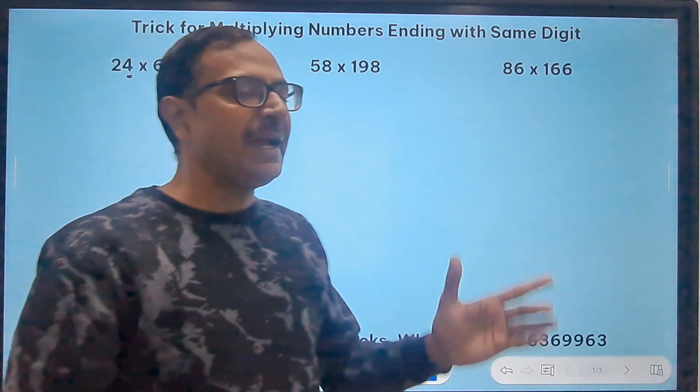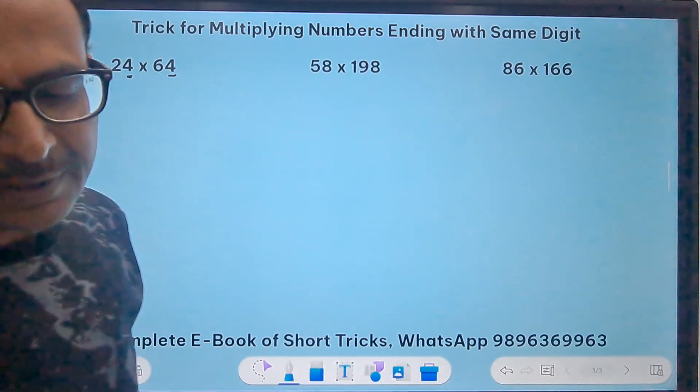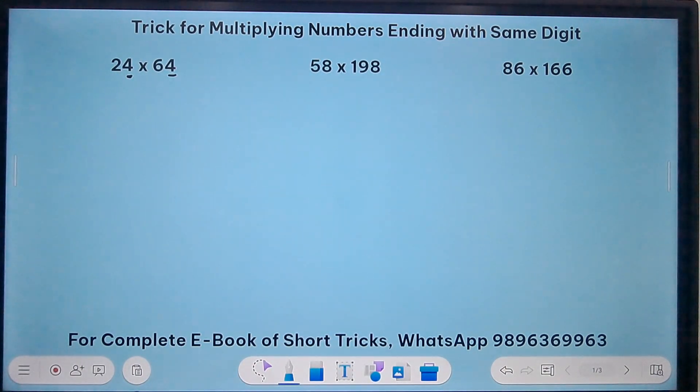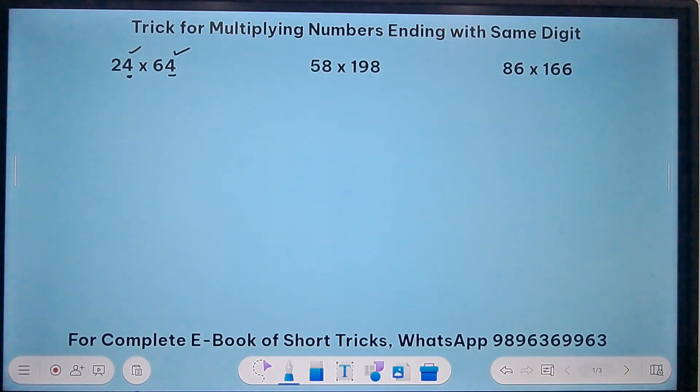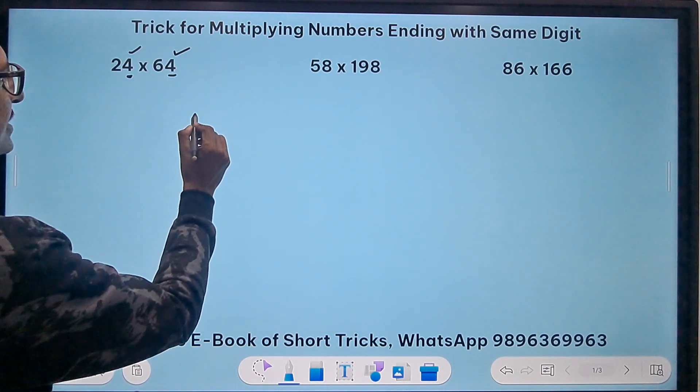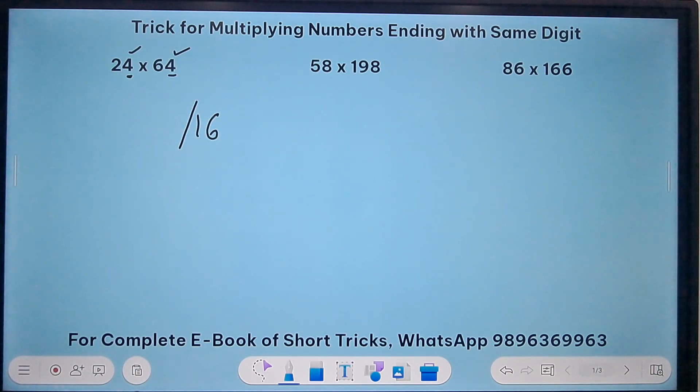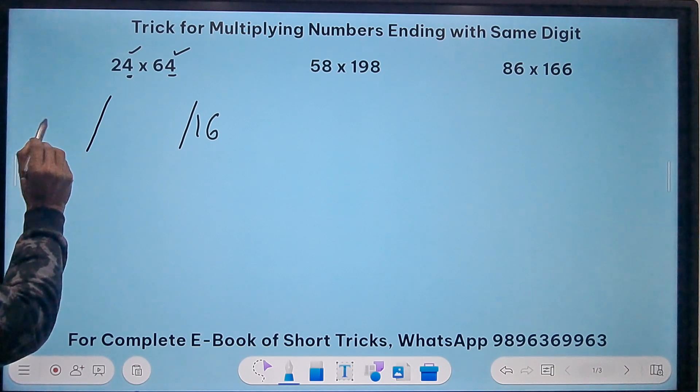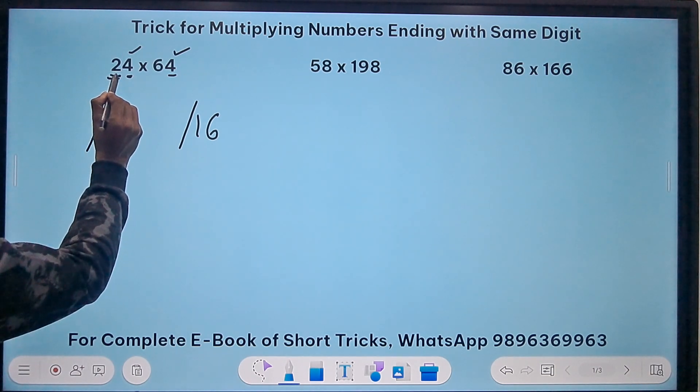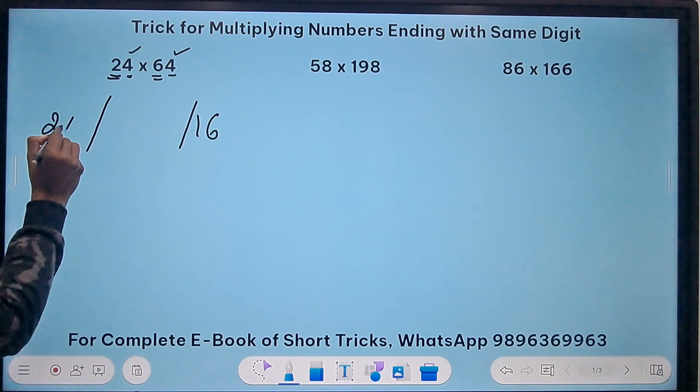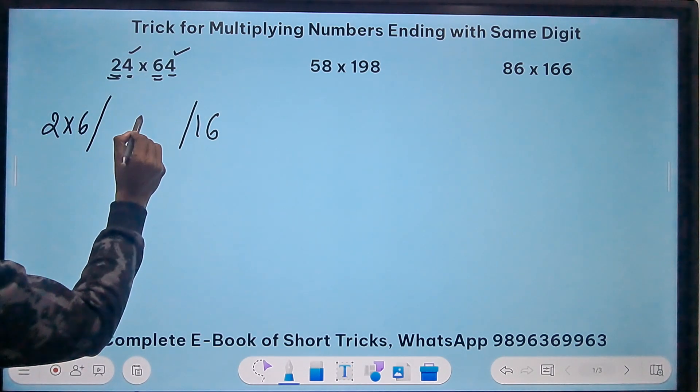Let's get going and see the trick. First let's understand by taking some basic examples which I have written here and then apply it for higher problems also. The trick goes like this: we know that the number ends in 4 here, and so I will write the number 16. 4 square is 16, right? I'll write 16. Now the first part is the product of the remaining numbers, that is 2 here and 6 here. So I have to multiply 2 times 6 here and 2 plus 6 in the middle.